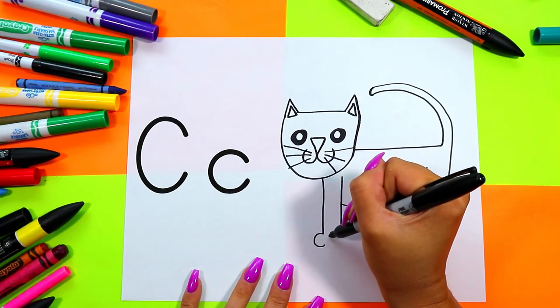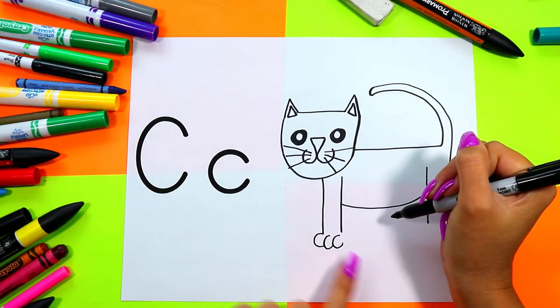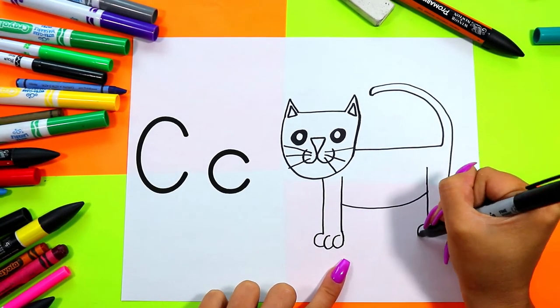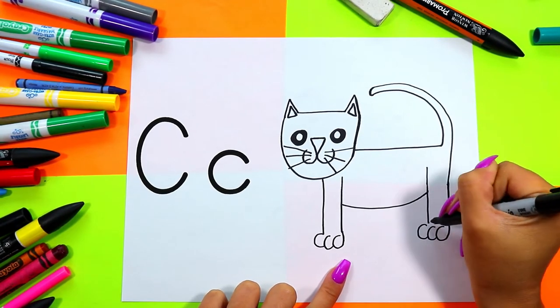Then we're going to use the letter C to make toes. You're going to draw three letter C's all beside each other to make cat's toes.